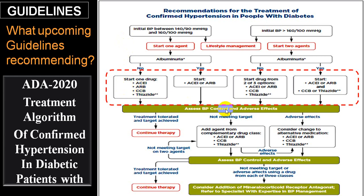For dual therapy, thiazide is one of the drugs of choice, and also in triple drug combination along with ARB, CCB, and diuretic. Chlorthalidone has a slight advantage over thiazide and is now becoming the drug of choice above the thiazide group.